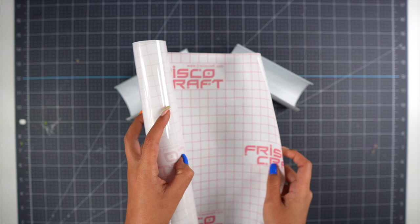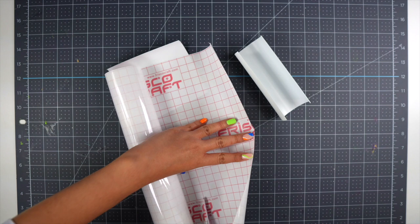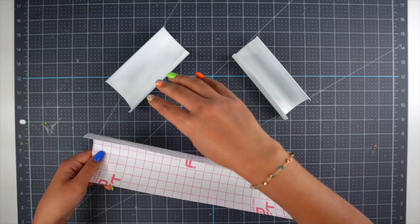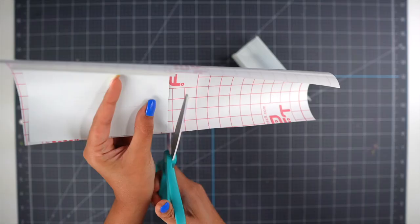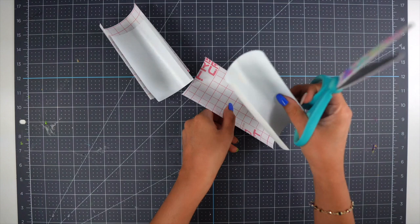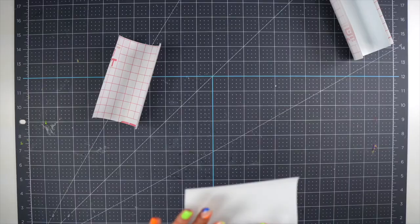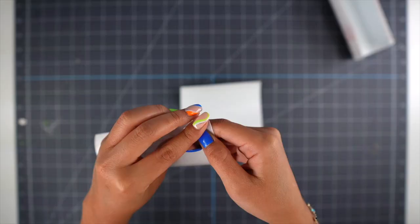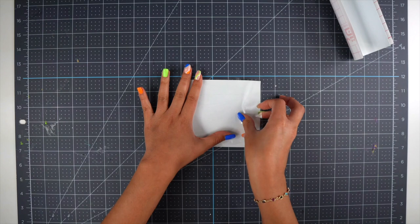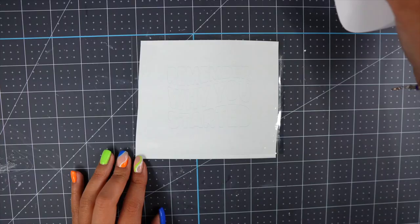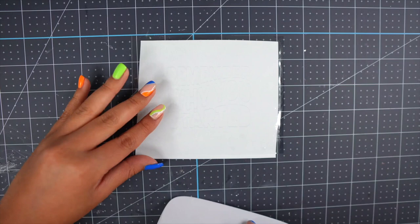Now to make that process easy for you I recommend trying out the reverse weeding hack. So you basically take your transfer tape, trim it down and you want it to fit the entire design. Take your transfer tape and place it right on top of the entire design. Use the squeegee tool to burnish it, and then flip it over and do the same.